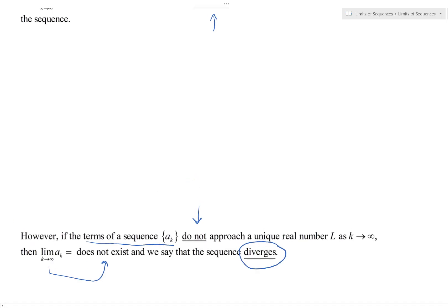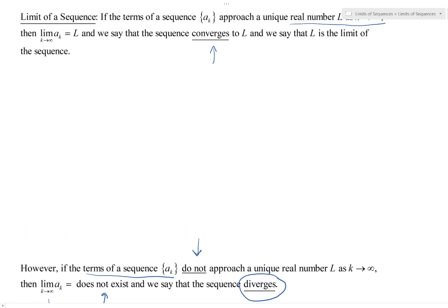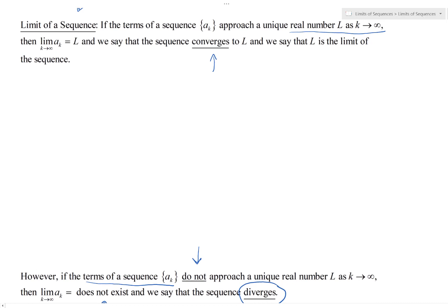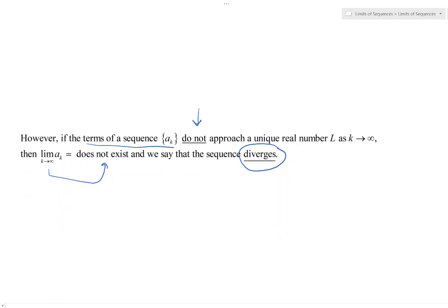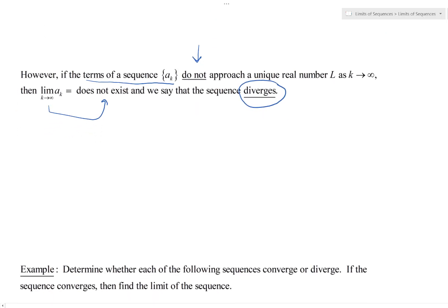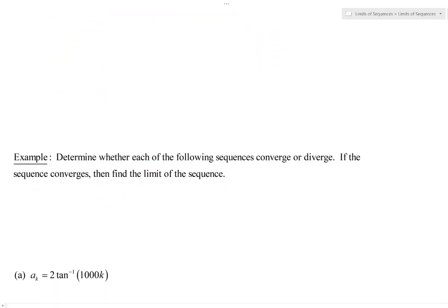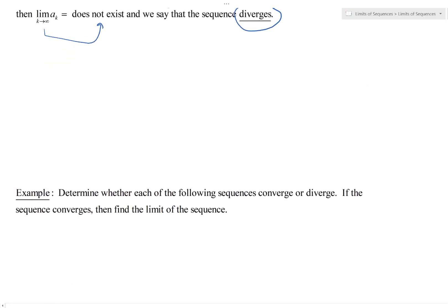Our goal here is: we have a limit of a sequence, and it's going to either converge if it approaches a real number L, or diverge if it doesn't. Now we're going to look at some examples to see whether or not sequences converge. For instance: determine whether each of the following sequences converges or diverges, and if the sequence converges, find the limit.